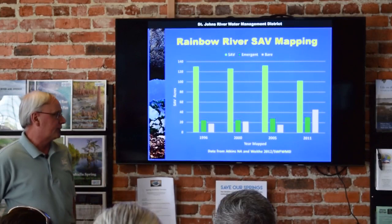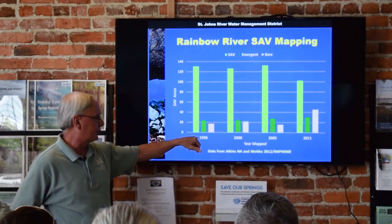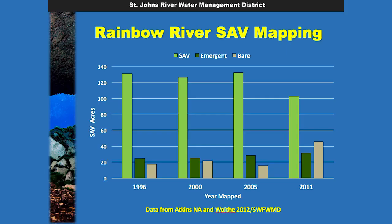The Rainbow River has probably had more SAV mapping done on it than any other spring run stream, mainly funded by the Southwest Florida Water Management District. About every five or six years since the mid-1990s, they've mapped both submerged and emergent vegetation on the Rainbow River. The submerged stuff really dominates — emergent vegetation acreage is much smaller. SAV seemed to be doing well for a while, but there was a bit of a dip in 2011, and at the five-to-six-year interval I don't know if they've redone the mapping.